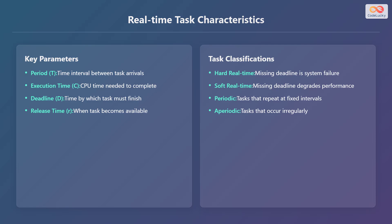The deadline denoted as D is the time by which the task must finish. And finally, the release time denoted as R is when the task becomes available for execution.